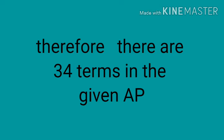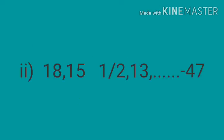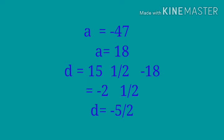Now the second question: 18, 15 and a half, 13, etc. up to negative 47. Here also we need to find the number of terms N. AN is given as negative 47, A is 18. What will be D? A2 minus A1: 15 and a half minus 18. Easily we can find — 18 minus 15 and a half is 2 and a half.